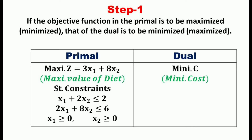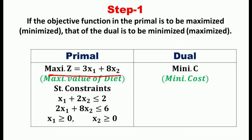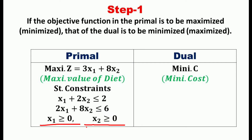Consider one example. The original problem, known as the primal problem, is maximization of profit — that is, maximization of z = 3x1 + 8x2. Here we have two decision variables x1 and x2, and our objective function is maximization of z, subjected to two constraints: x1 + 2x2 ≤ 2 and 2x1 + 8x2 ≤ 6, with x1 and x2 ≥ 0.